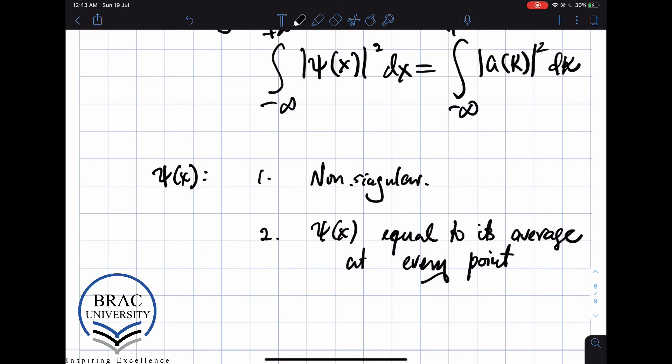And lastly, the mod of ψ integrated over the whole range has to be finite. This has to exist. So it's only when ψ(x) satisfies these conditions that we can express it as a Fourier integral.